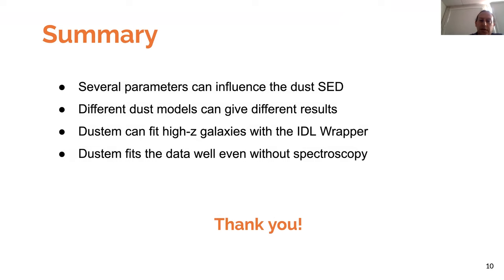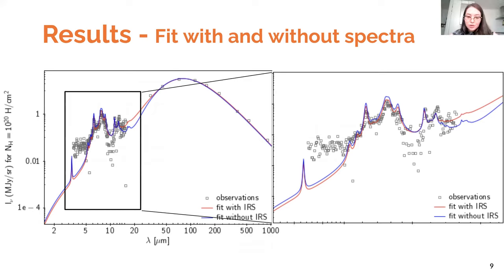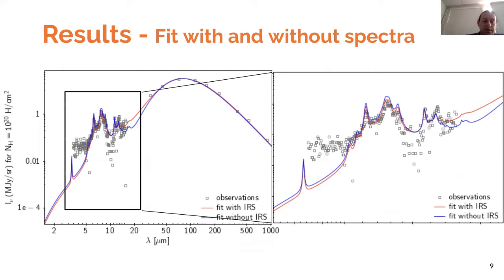For the last part, when you fit the detailed spectrum, did you also vary the charge of the PAH? No, we did try different models because the SED depends a little bit on the model that we choose — this one I think is the Compiegne model. There is also a question in the chat: which grain size distribution has been used, and does a different distribution affect the results significantly?